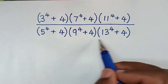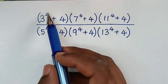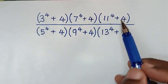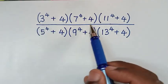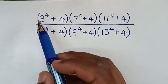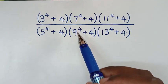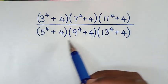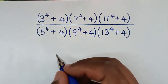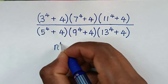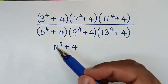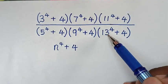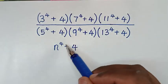Now from this problem, we can see we have the same powers of 4. Also, we have plus 4 in each part. But the only difference is the odd numbers: 3, 5, 7, 9, 11, 13. The general form of each part is n power 4 plus 4, where n represents these odd numbers.